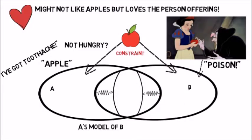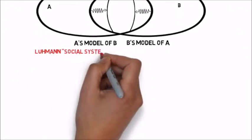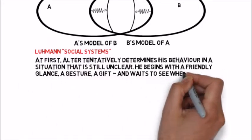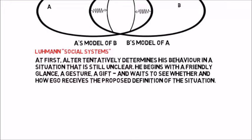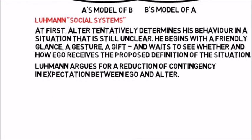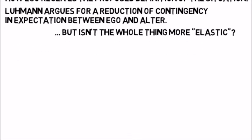The point is that these multiple constraints contribute to a process where A is continually modifying their model of B, and B is continually modifying their model of A. Now in Luhmann's social systems theory, there is a sense that he's articulating a dynamic where individuals are picking up all sorts of signals from each other when they communicate — a friendly glance, a gesture, a gift — waiting to see how the other person receives the definition of a particular situation. But fundamentally, Luhmann has a very binary idea of communication and he does see it as a process of reducing contingency and expectations between people. What I want to suggest is that actually we're looking at something much more aesthetic and elastic in terms of communication between people.